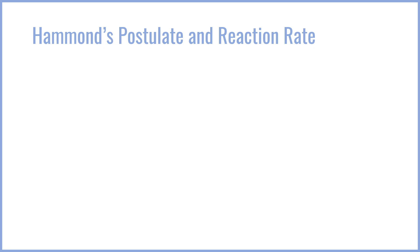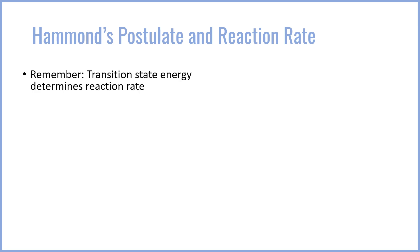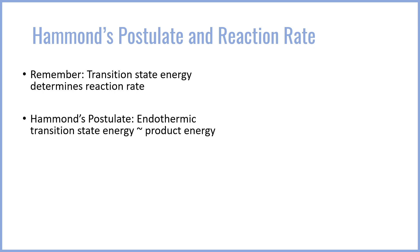The first thing I want to go over — and you may have seen this already if you looked at the SN1 reaction overview video — is Hammond's postulate. The transition state energy is what determines the rate of a reaction. If the transition state has very high energy, that reaction is going to be harder to access because the compound has to reach the transition state before reaching the product energy. Hammond's postulate states that for an endothermic reaction — one where delta H is positive, or we're climbing uphill towards the product energy — the transition state looks more like the product energy than it does like the reactant energy.